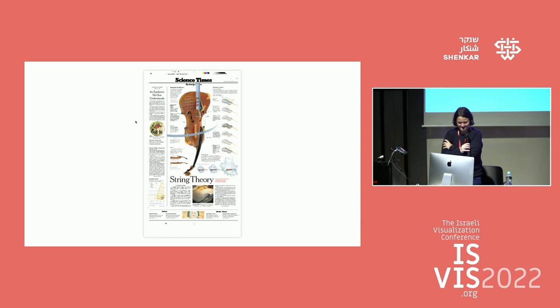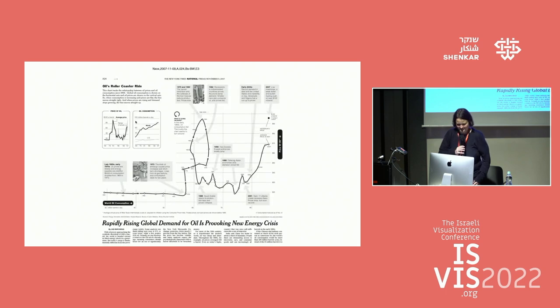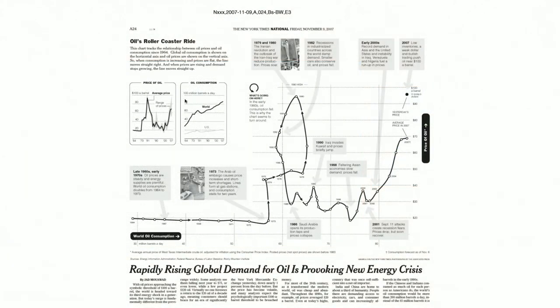I started thinking about this early in my career. A colleague, Graham Roberts, spent days or weeks rendering a violin illustration, and I thought: why don't you just take a picture of a real one? What have you abstracted away? Coming from a statistical background, I was making pictures like a scatter plot of how much oil the world has consumed against the price of oil — the idea being that when the price of oil goes up, people drive less and consume less, so the line turns around.